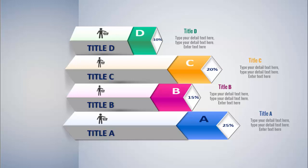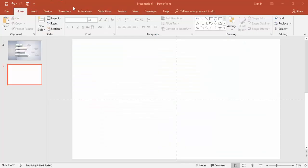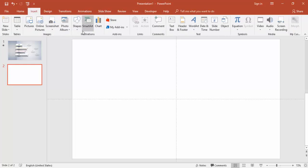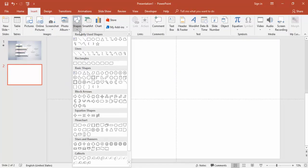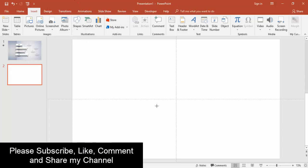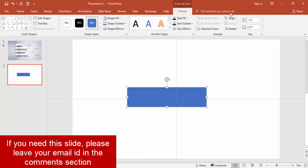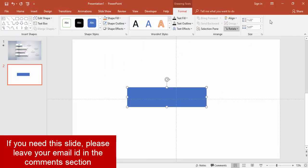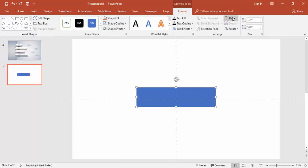Add a new slide and go to the View menu, enable the guides. Go to the Insert tab, select Shapes, choose a rectangle, and draw it. Make it no outline, align center, and align middle.